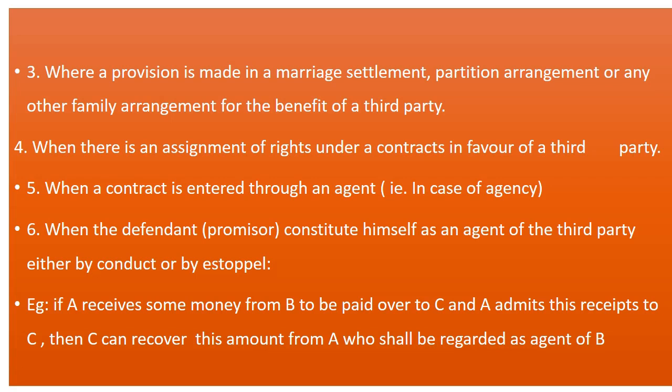Point number three: where a provision is made in a marriage settlement, partition arrangement, or any other family arrangement for the benefit of a third party. In such cases, the third party is eligible to claim his share even though he is not a party to the contract. For example, during partition — division of property — certain amount is kept for the marriage of a girl child or for the benefit of an old-aged member of the family. They can claim their share even though they are not part of the contract. Point number four: where there is an assignment of rights under a contract in favour of a third party. Even though he is not a party to the contract, based on the rights assigned to him, he can enforce the contract.